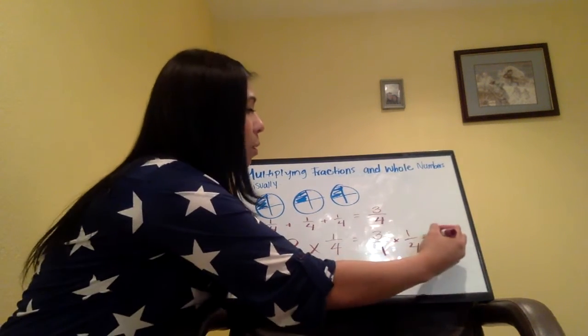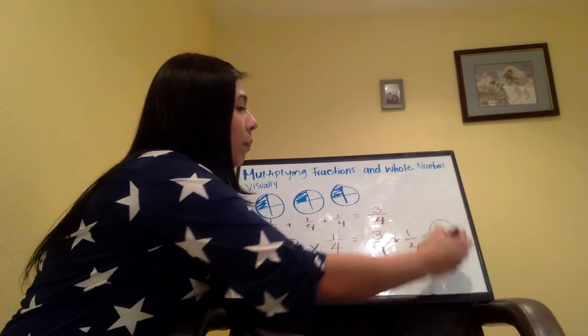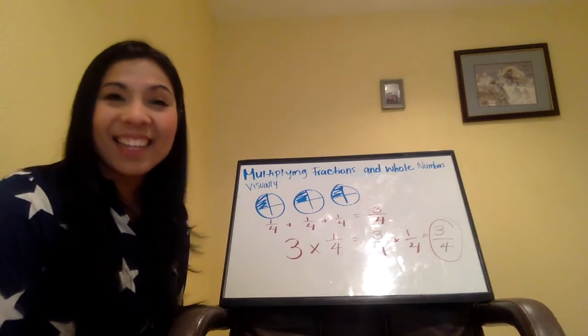Do you see that? Equals three times one equals three and one times four equals four. There we go. And that's how you solve it.